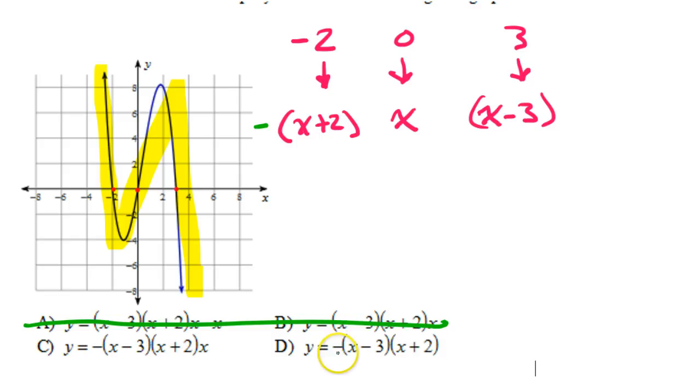This one doesn't have an extra X on it. We need that extra X. So it can't be D. So that means the answer must be C. It's got the negative. It's got the x minus 3. It's got the x plus 2. And it's got the extra X. So the answer is C.